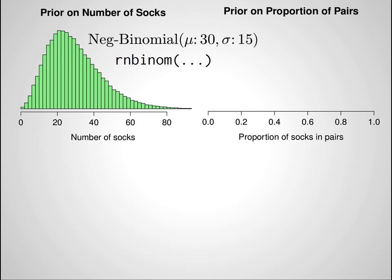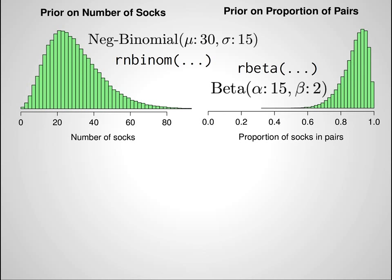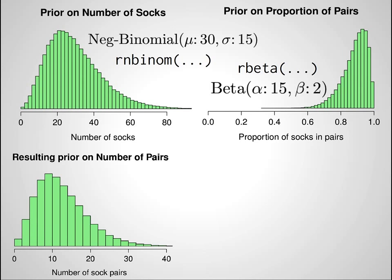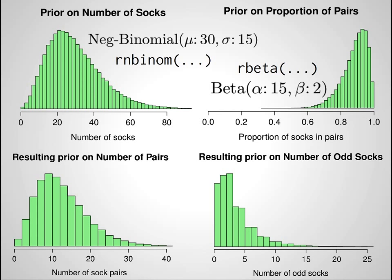Now we need a prior on the proportion of pairs. Some people are really orderly and have all their socks in neat pairs, but I often find that only about 75% of my socks are in pairs. So I'll put a prior that covers this range — a beta prior, sampled using the rbeta function in R. If you know the number of socks and the proportion of pairs, you also know the number of pairs and the number of odd socks.